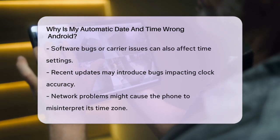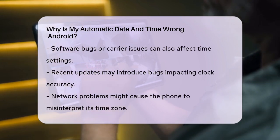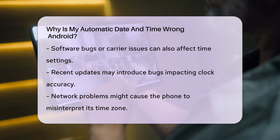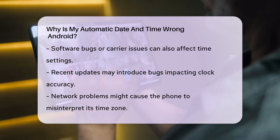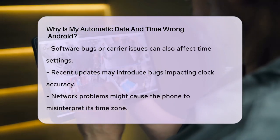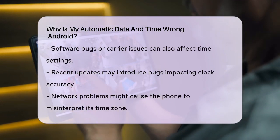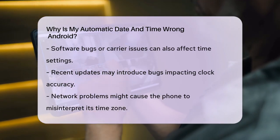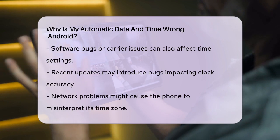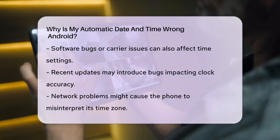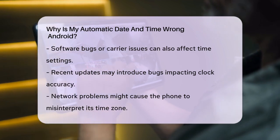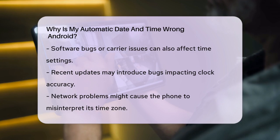Another possible reason for the wrong time is a software bug or an issue with your wireless carrier. Sometimes, a recent device update might introduce a bug that affects the clock settings. In such cases, you might need to wait for a patch to be released.